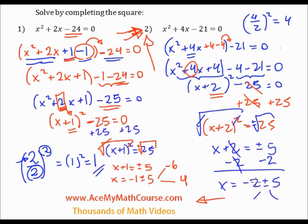So, we get two answers. The first one being negative 2 minus 5, which is negative 7. The second one, negative 2 plus 5, positive 3.